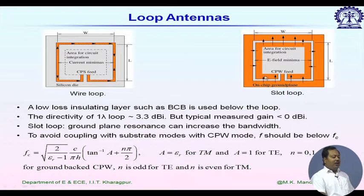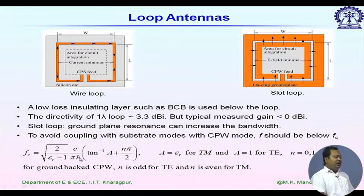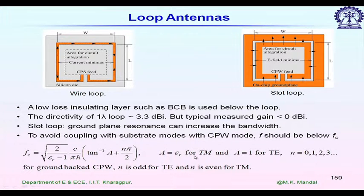For bandwidth improvement of any antenna, there is a thumb rule: to avoid surface wave mode generation, the operating frequency f should be smaller than the cutoff frequency f_c, given by square root of 2 divided by (epsilon_r minus 1), which is a function of h, the substrate thickness. The constant a equals epsilon_r for TM-type surface wave modes, and a equals 1 for TE-type surface wave modes. n is an integer, and for ground-backed CPW, n is odd for TE and even for TM modes.